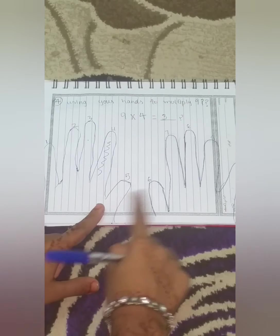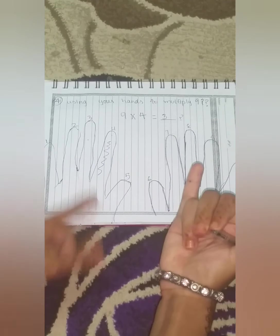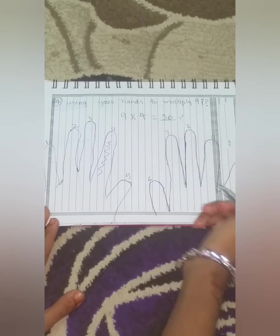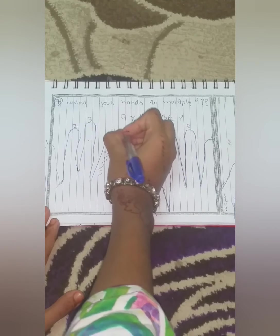Next, we will find how many fingers are left after it. So here we have 6 number left. So the next digit will be 6. So here we get the answer 36.